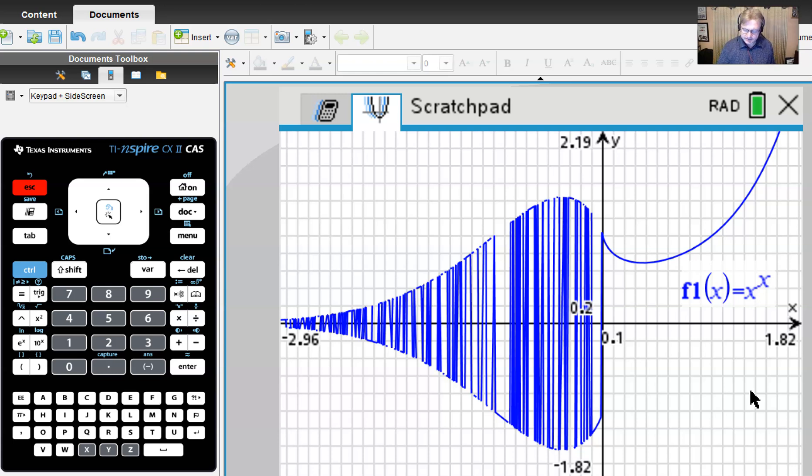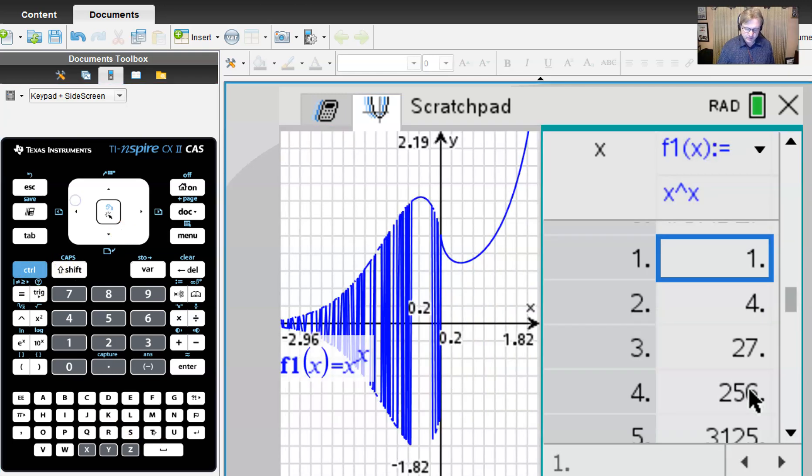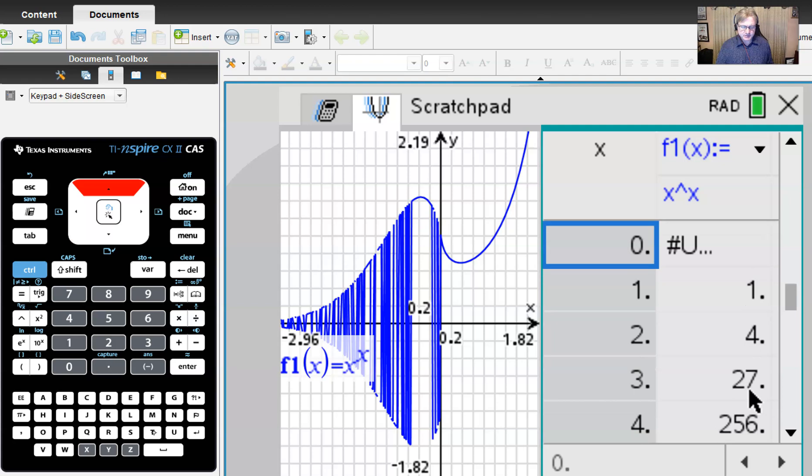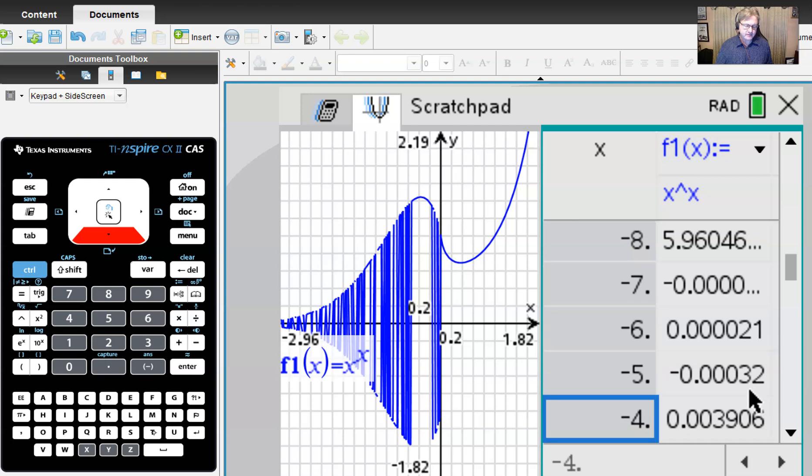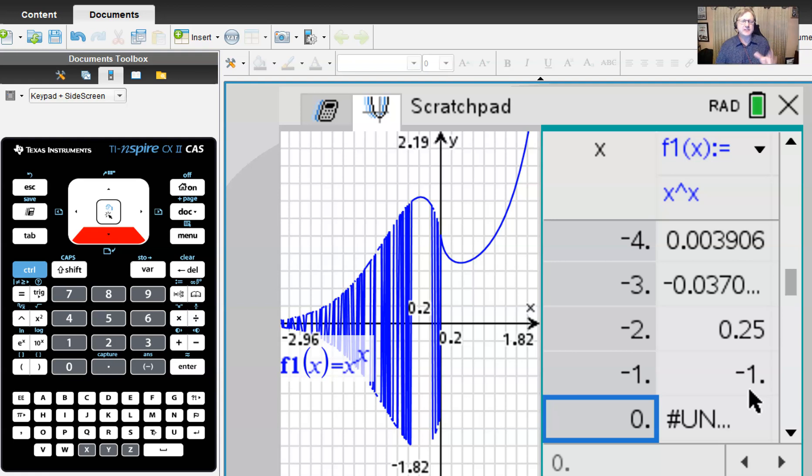One of the things I thought about doing is set up a table of values to get a better look. I can use the shortcut Ctrl+T to bring up my table, but this table is rather limiting in that I can't type anything. It's only going to give me integer values of x and it really seems to be doing a pretty good job of spitting out some y values. The only one it has trouble with is zero to the zero power, which is kind of an indeterminate form if you will.